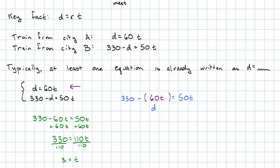Now we plug that in to the first equation, which is going to be easier. D is 60 times the 3 we just found. And we get D is 180.